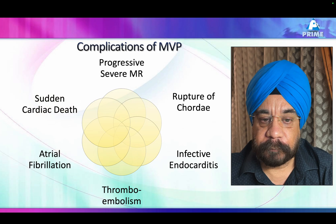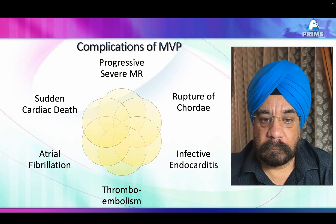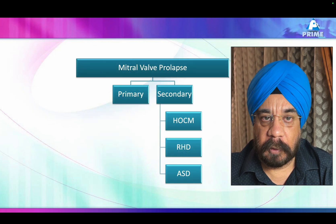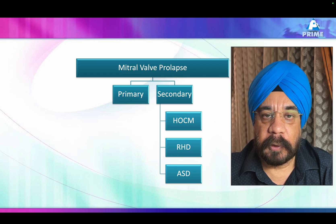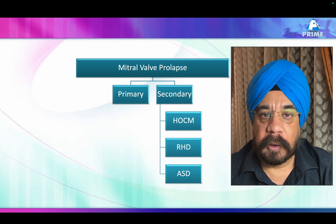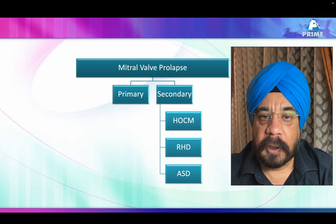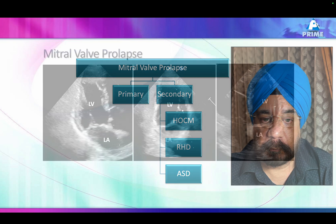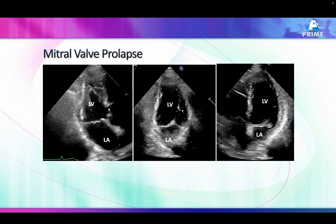Mitral valve prolapse can also be of secondary origin — we see it in patients with hypertrophic cardiomyopathy and rheumatic heart disease, which can occasionally lead to weakening of the mitral valve. ASD is also very commonly associated with mitral valve prolapse. This is the usual garden variety of mitral valve prolapse.